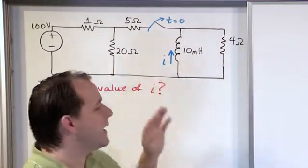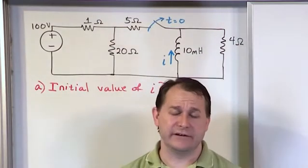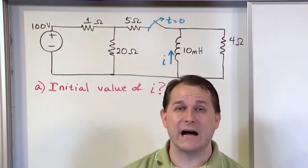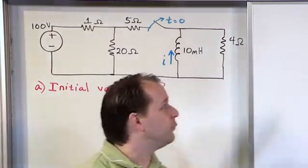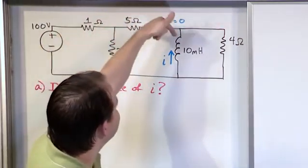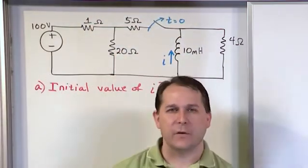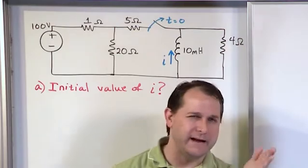You can't change the direction of i because it's given to you. So you suspect, just by looking at the problem, that when we finally find i, it should be negative because the current should be coming out this way, circulating contrary to what we've drawn here. So i should end up being negative. Keep that in the back of your mind.